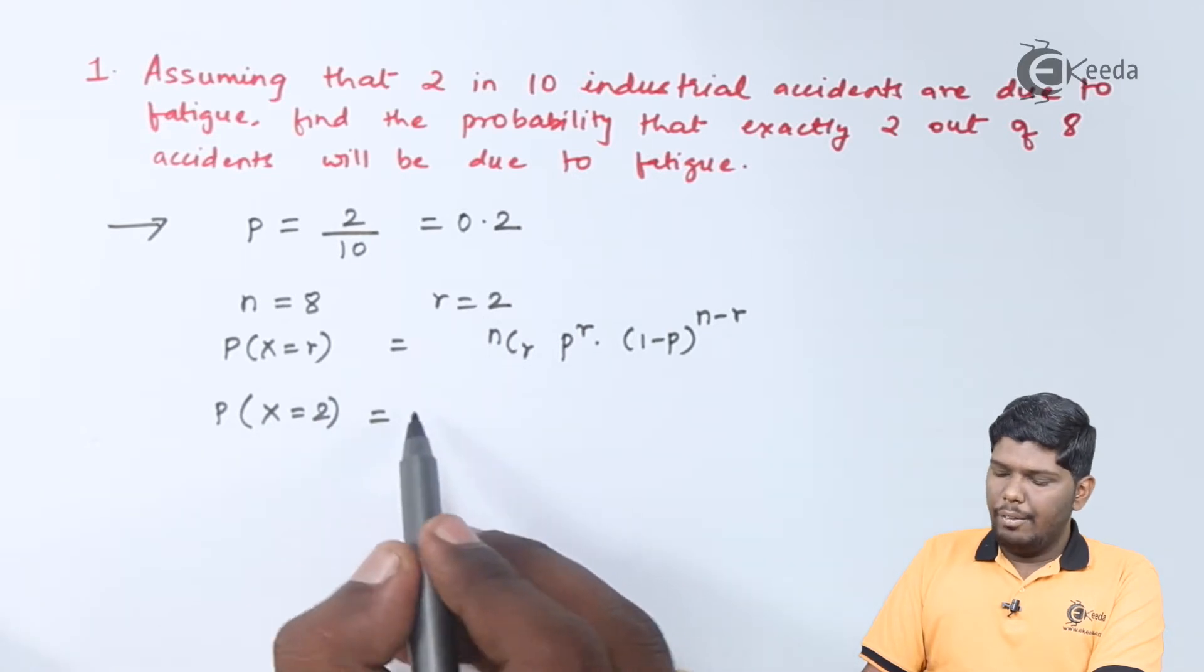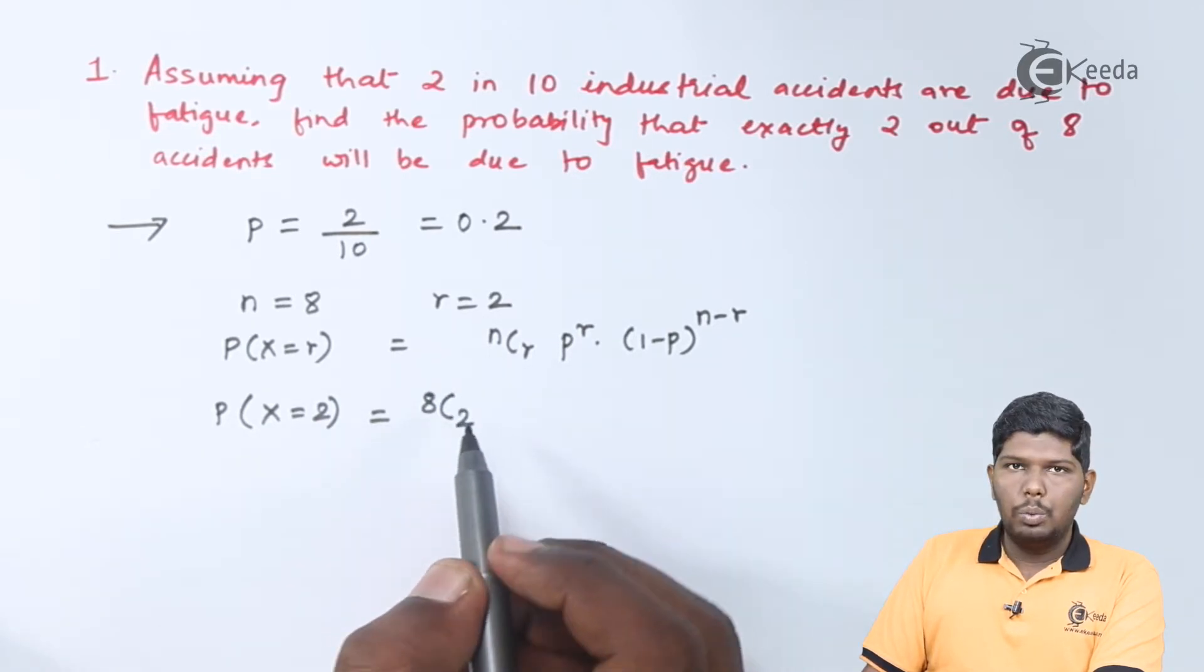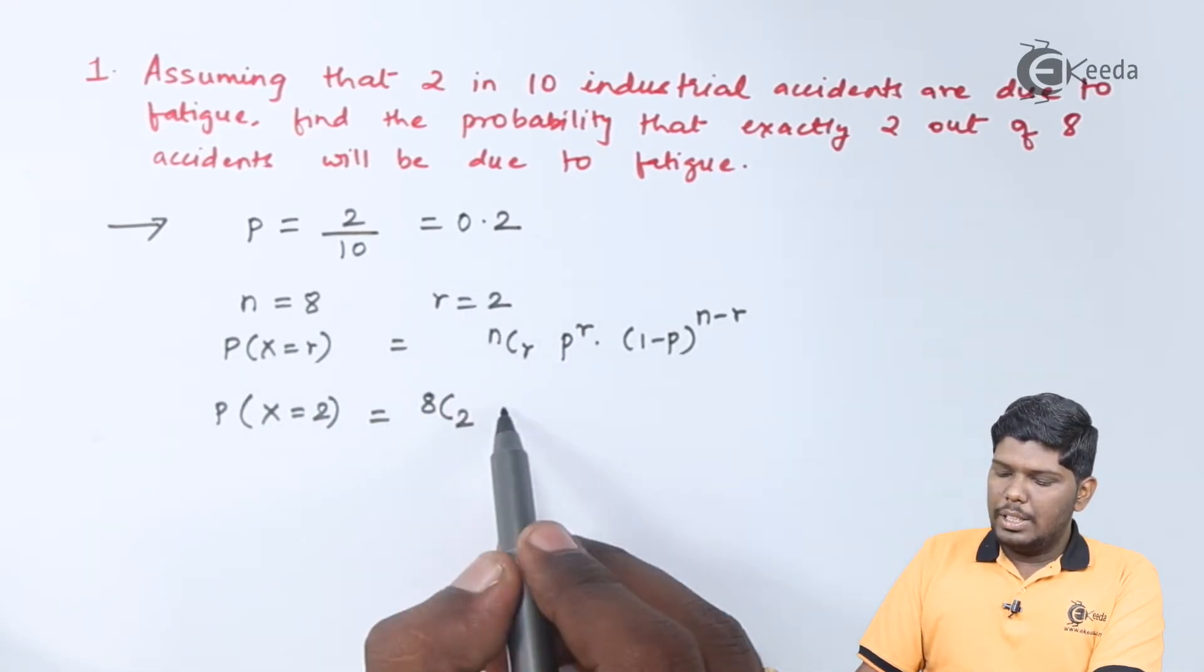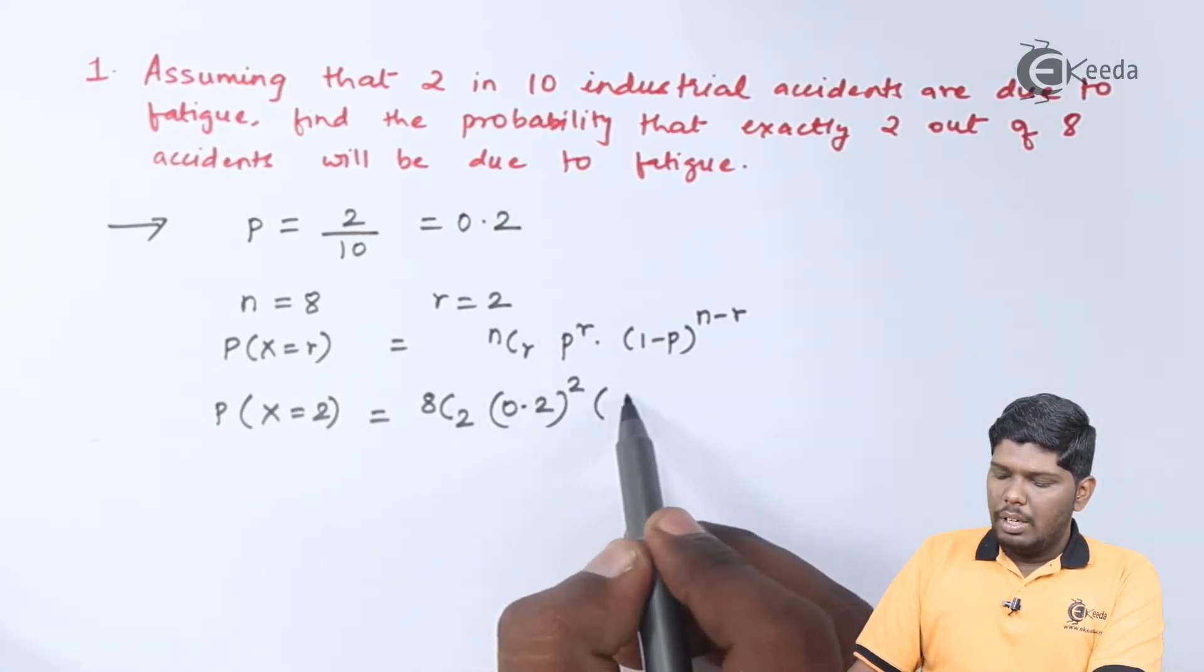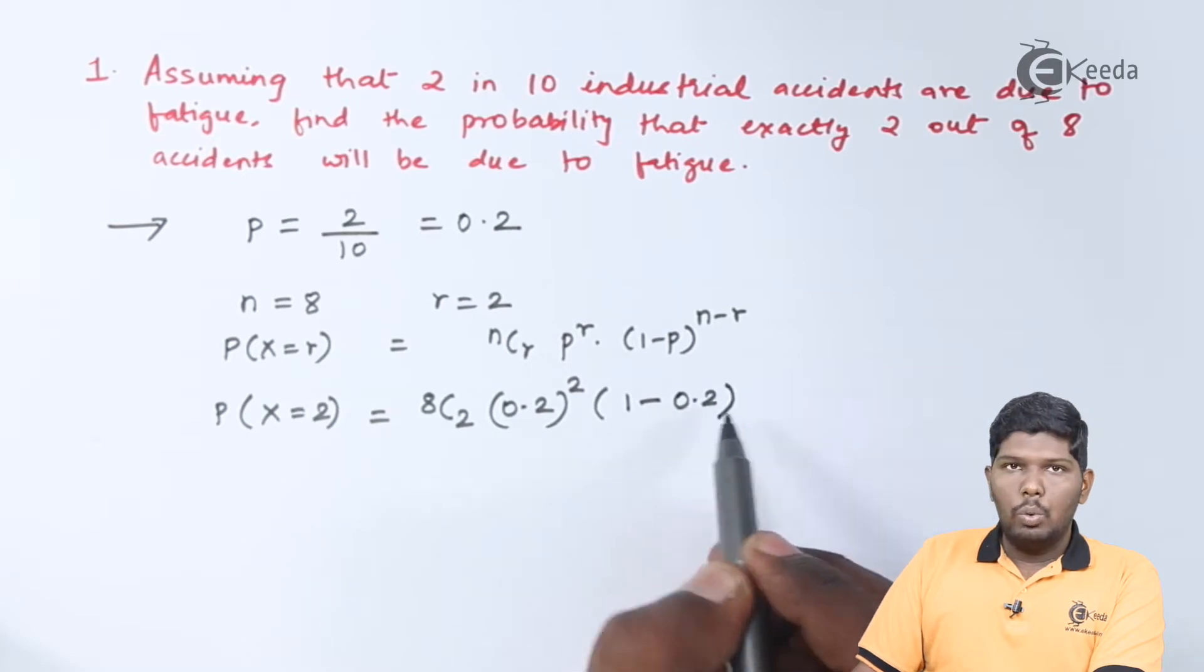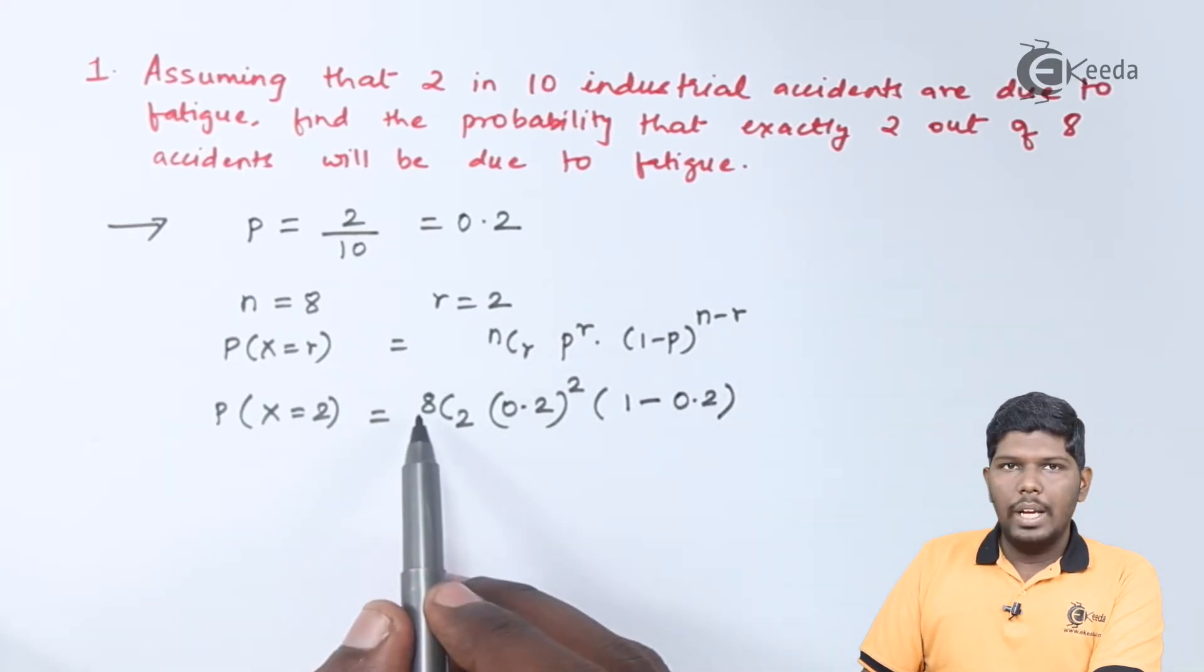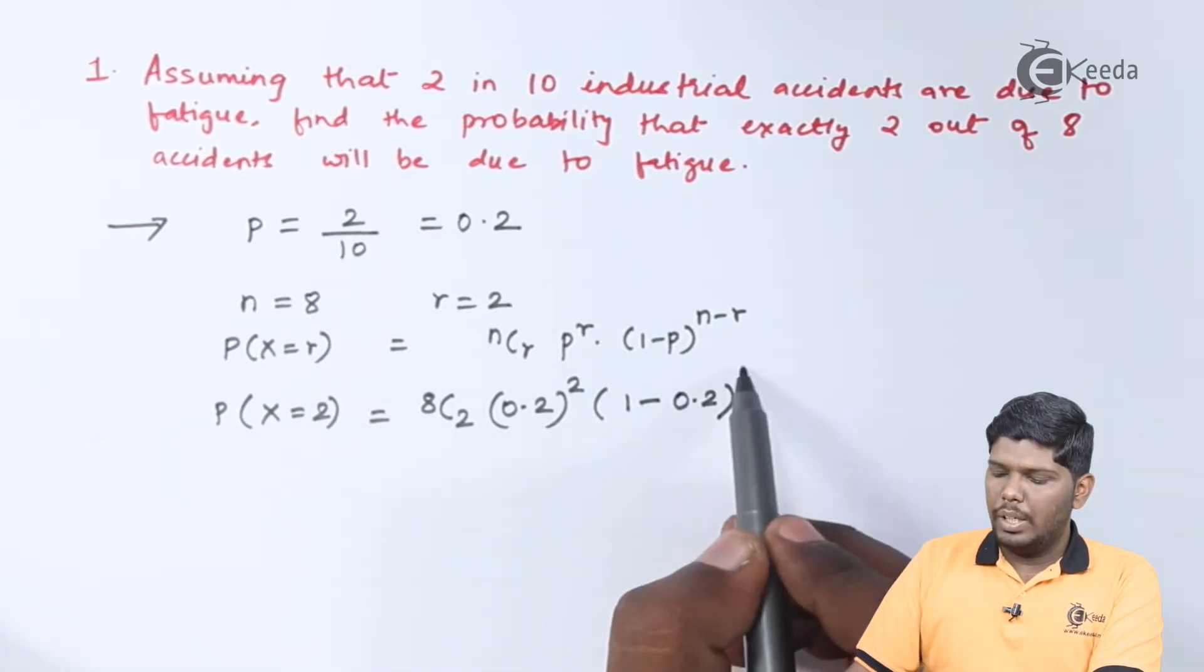Out of 8, we have nCr that becomes 8C2. The value of p is 0.2 raised to r, again r is 2. Further we have (1 - 0.2) raised to (n - r), so n is 8, r is 2, 8 minus 2 gives you 6.